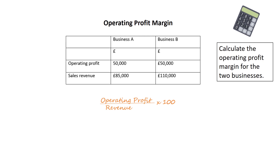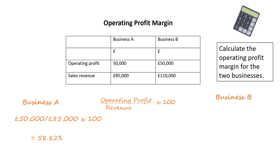We're required to calculate the operating profit margin for business A and business B. For business A, divide £50,000 by £85,000 sales revenue, times by 100 — the answer is 58.82%. For business B, divide £50,000 by £110,000 sales revenue, times by 100 — the answer is 45.45%.